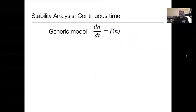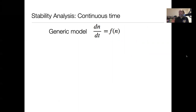Welcome back. In the last video, we covered the discrete time version of stability analysis, which we use to determine for a population model or any other dynamic model whether an equilibrium is going to be stable or unstable. Are we sitting on top of a hill or in a valley, in terms of the metaphor of balls rolling off hills and into valleys? So let's now think about that from a continuous time perspective.